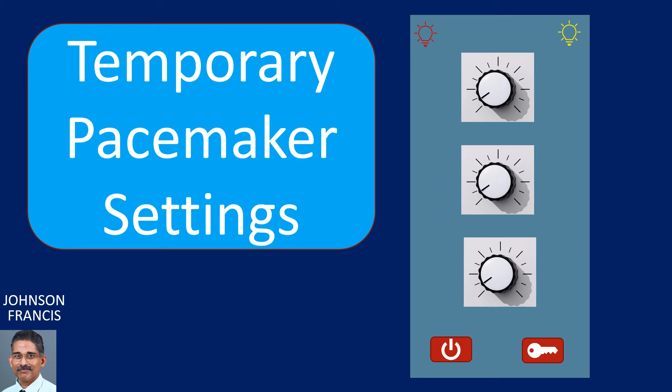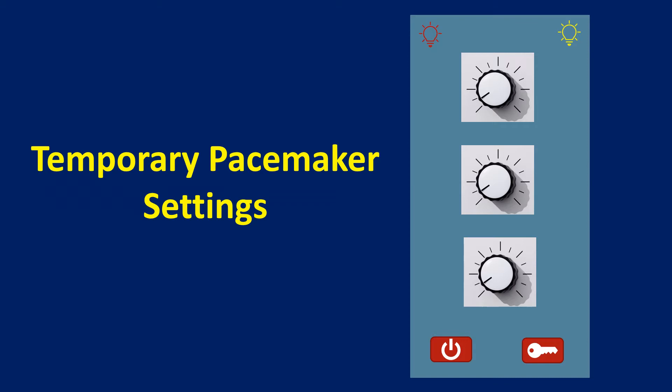This is an accompanying video for the previous video on temporary pacing available on this channel. This video will describe the basic temporary pacemaker settings. The controls and buttons shown here are symbolic and vary between different models of pacemakers. Some pacemakers have a display of the modes and parameters in addition. This description is on a commonly used single chamber temporary pacemaker. Dual chamber temporary pacemakers will have additional controls and displays.